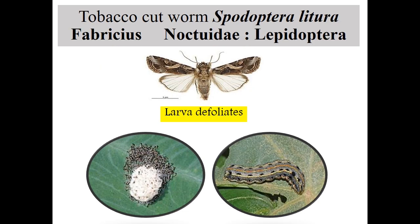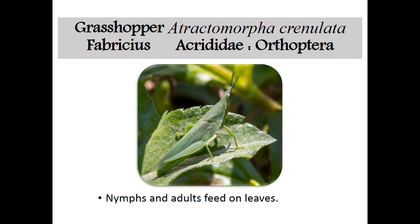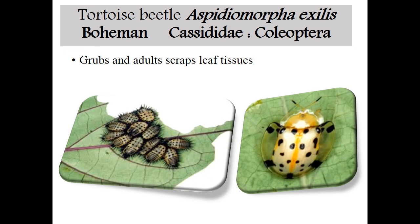Next one is tobacco cutworm, Spodoptera litura. See the egg mass surrounded by scales like Spodoptera litura. The fifth instar larva is dull dark greenish in color. The adult has a peculiar golden border marking on the forewings of Spodoptera litura. And this one is grasshopper, Atractomorpha crenulata, Family Acrididae, Order Orthoptera — nymphs and adults both feed on leaves. Next one is tortoise beetle, Aspidomorpha miliaris, Family Chrysomelidae, Order Coleoptera. You can see both grub and adult. Both adult and grubs scrape the leaf tissues, causing damage to leaves.